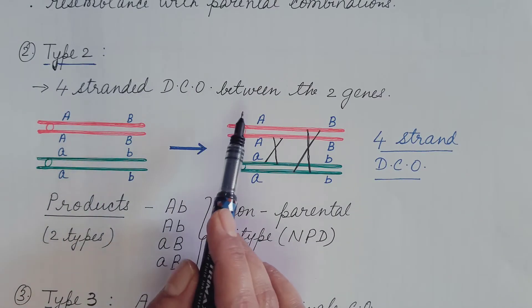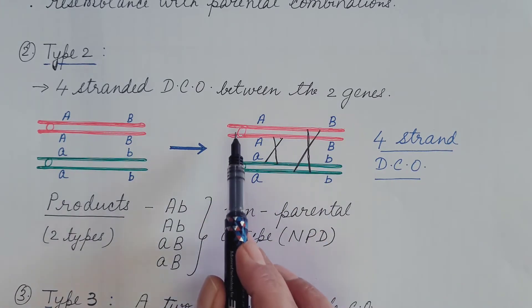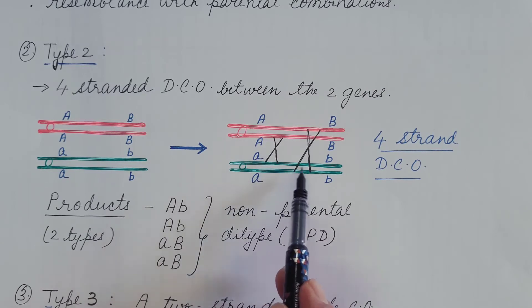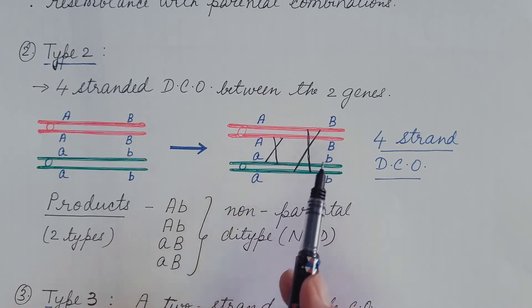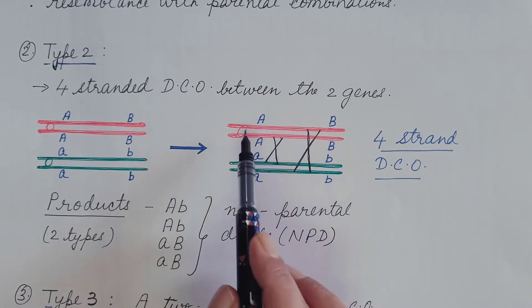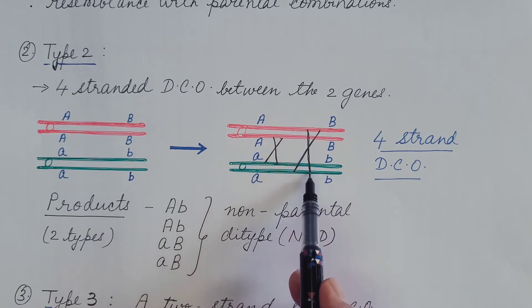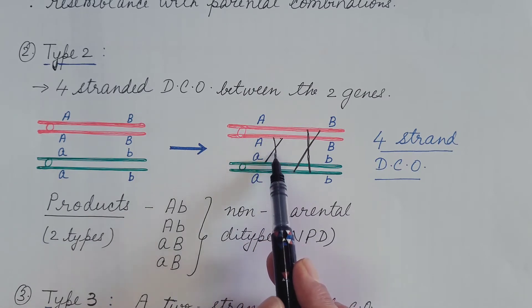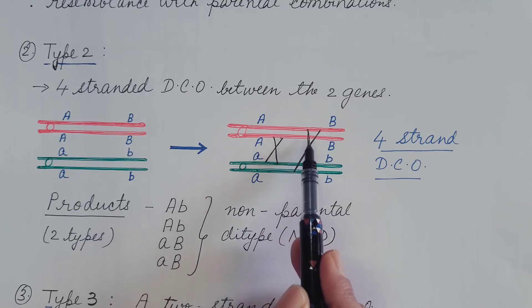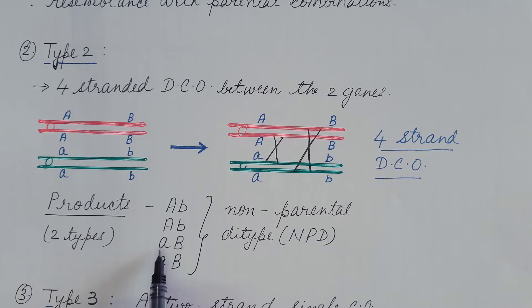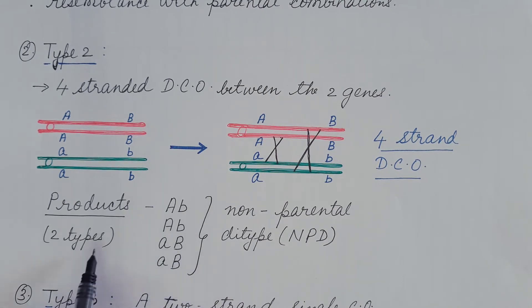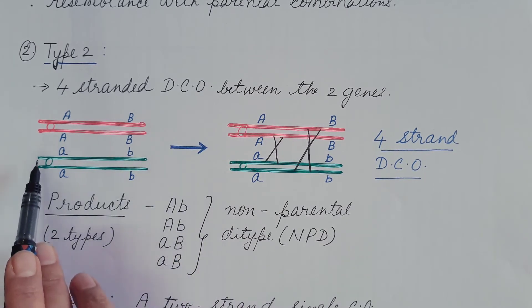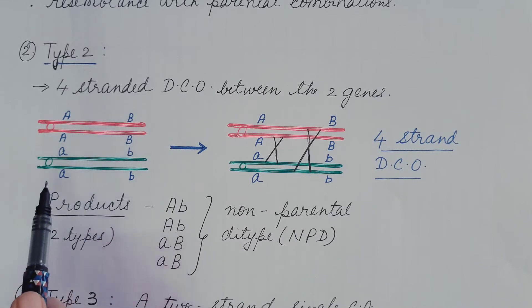Type 2: a four-strand double crossover occurs between the two genes. One crossover takes place between one pair of strands and another between a different pair, making it a four-strand double crossover. The product of meiosis is capital A small b, capital A small b, small a capital B, small a capital B. The two combinations — capital A small b and small a capital B — none of them resemble the parental type (capital AB or small ab). So this tetrad is known as Non-Parental Ditype, or NPD.